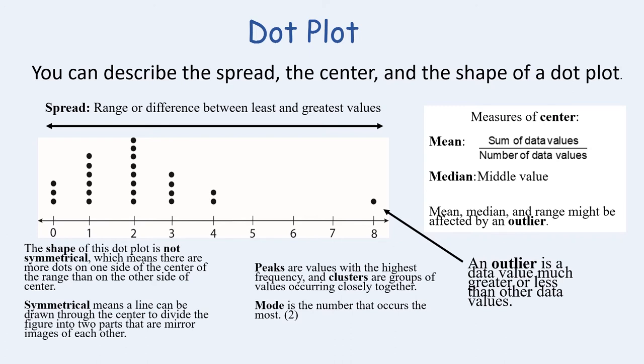Lastly, we can identify the mode by looking at the frequency. The mode on our dot plot here is two since it occurs the most, and the words that are highlighted or bolded can describe the spread, the center, and the shape of the dot plot.